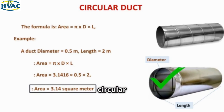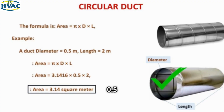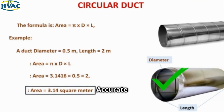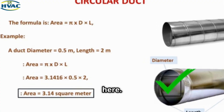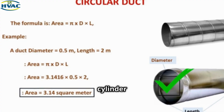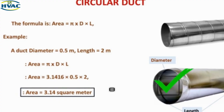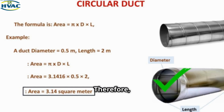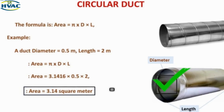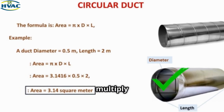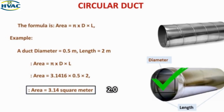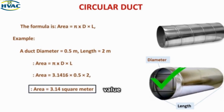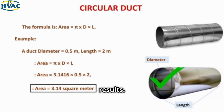For a circular duct with a diameter of 0.5 meters and a length of 2.0 meters, accurate measurements are key. The formula for the surface area is: area = π × diameter × length. Therefore, area = π × 0.5 × 2.0 = 3.14 square meters. Remember to use the correct value of pi for accurate results.